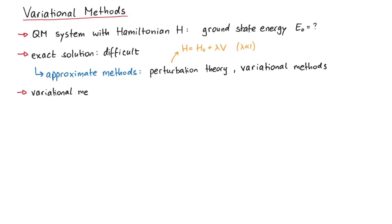In variational methods, you start with a test wave function, psi t, and slightly change it until you reach the smallest energy that you can find. In fact, we can show that the following energy functional is always greater than or equal to the ground state energy E0 for all test wave functions.